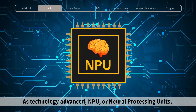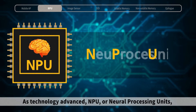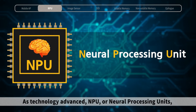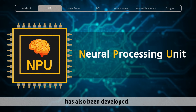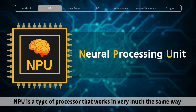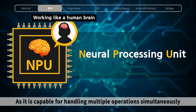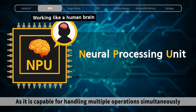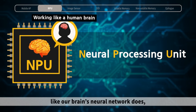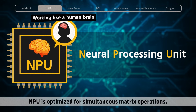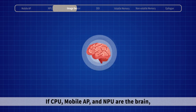As technology advanced, NPU, or Neural Processing Units, has also been developed. NPU is a type of processor that works in very much the same way as the human brain, as it is capable of handling multiple operations simultaneously in real time. Like our brain's neural network does, NPU is optimized for simultaneous matrix operations.